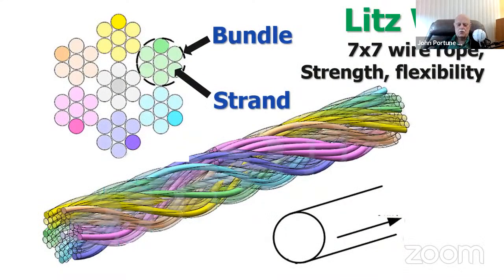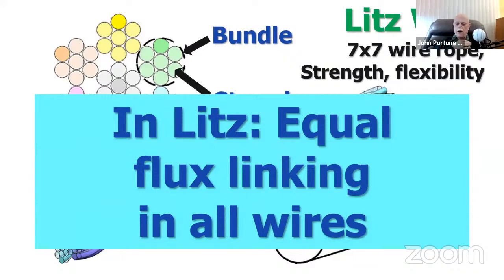Many of you might have heard of Litz wire — this is not so commonly used anymore, but it's still available. Litz wire is wire arranged so that the flux linkage in all of the conductors is equal. Therefore, the current in all of the conductors is equal. Litz wire is made by making bundles of seven in the efficient geometric shape and then bundling those strands into additional seven-strand bundles. A 49-strand bundle is typically Litz wire. It has much better current handling capacity than solid wire. In Litz wire, there's equal flux linkage in all of the wires, so all of the wires are conducting the same amount of current, inside or outside.